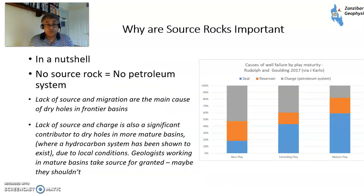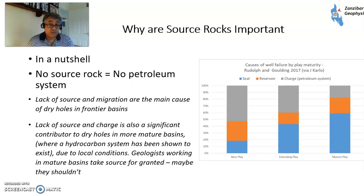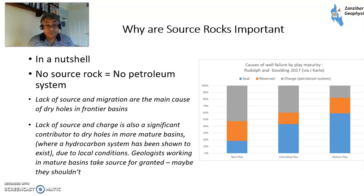So why is this important? In a nutshell, we don't have a source rock, we don't have a petroleum system — game over. The lack of source rock and migration are the main causes of dry holes in frontier basins. Some of these dry holes are expensive — we're talking tens of millions up to a hundred million dollars a well. And when you have a one in ten chance of it working, that's kind of scary. However, when it does work, it more than makes up for the failures.